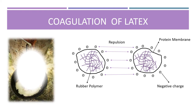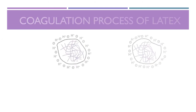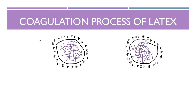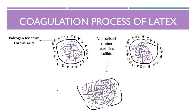What causes latex coagulation? The addition of certain acids such as formic acid causes latex to coagulate faster. This is because hydrogen ions from the acid neutralize the negative charges surrounding the rubber particles. These neutralized particles then collide with one another, causing the protein membrane to rupture. The rubber polymers are released and start to coalesce, leading to coagulation of latex.